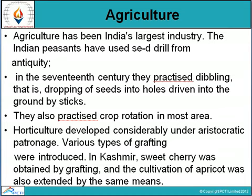Agriculture has been India's largest industry. Indian farmers used the seed drill from antiquity, and in the 17th century they practiced dibbling — dropping seeds into holes dug into the ground by sticks. They also practiced crop rotation in most areas.